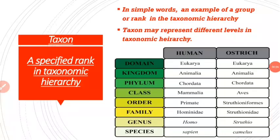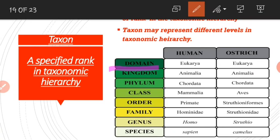What is a taxon? A taxon is a specified rank in the taxonomic hierarchy. In simple words, a taxon is a particular example of a group or rank in the taxonomic hierarchy. So when I say domain, I am referring to a taxonomic category. But when I specify the domain — for example, domain Eukarya — I am referring to a taxon belonging to the taxonomic category domain.